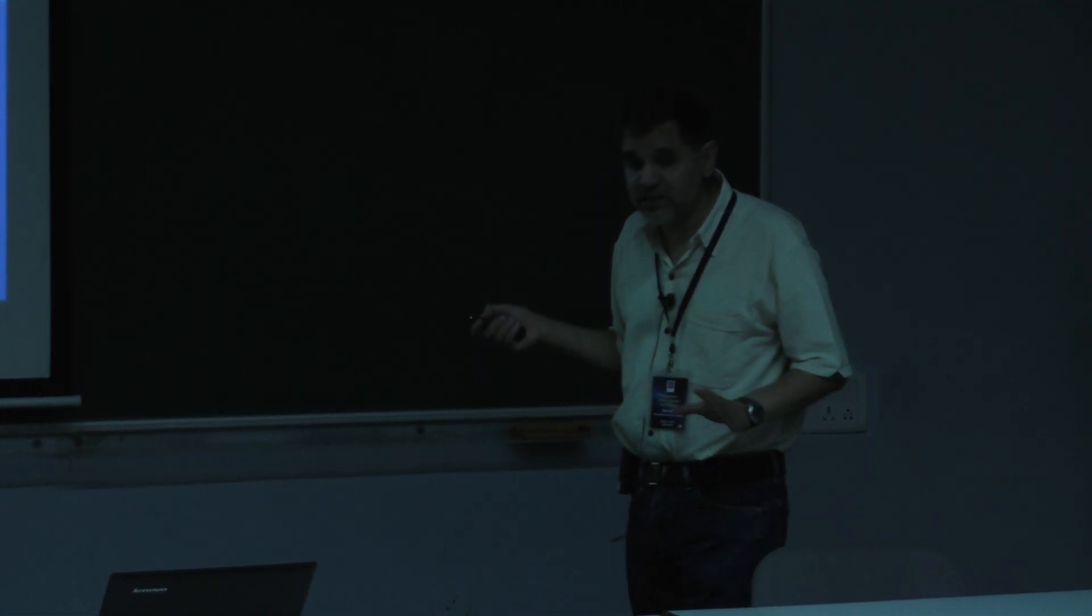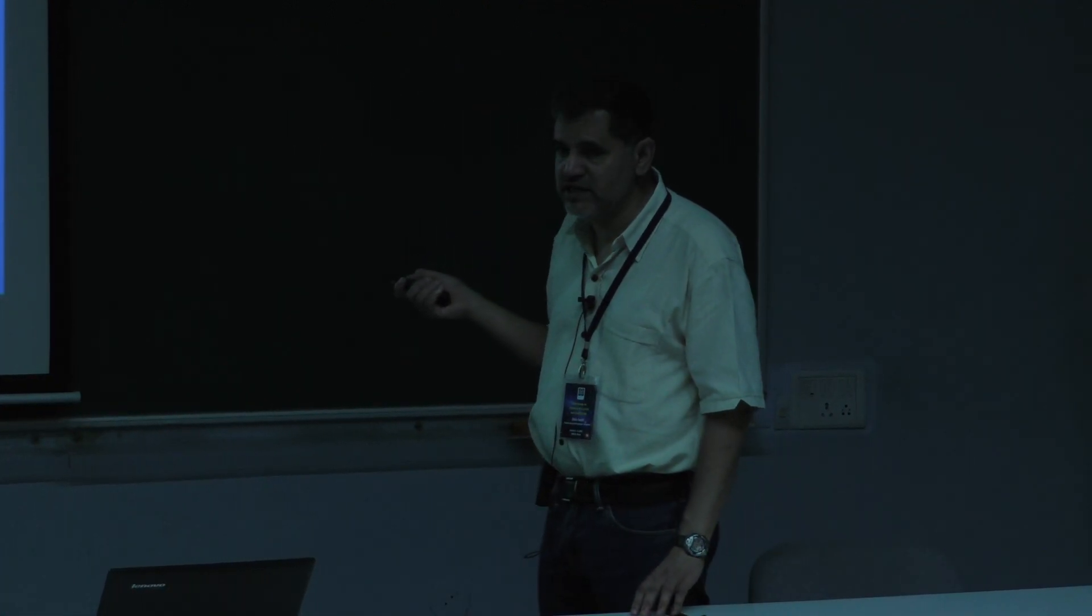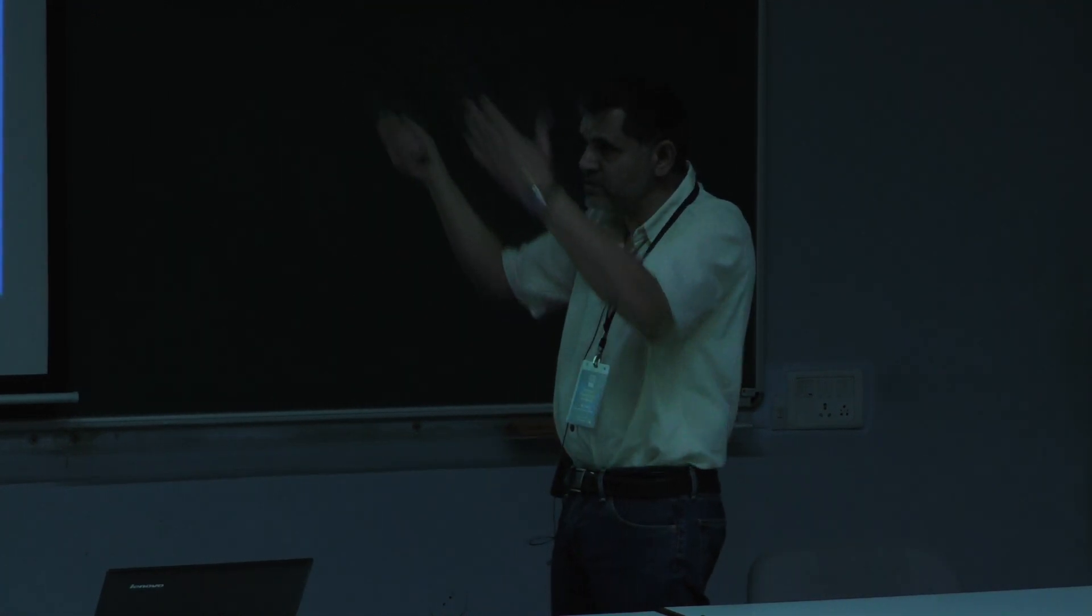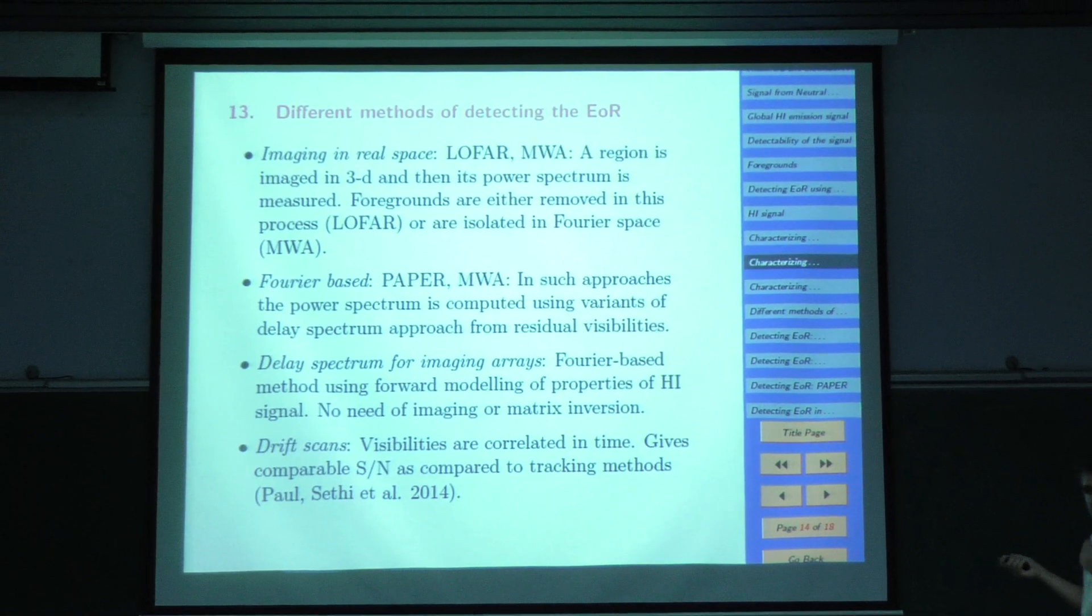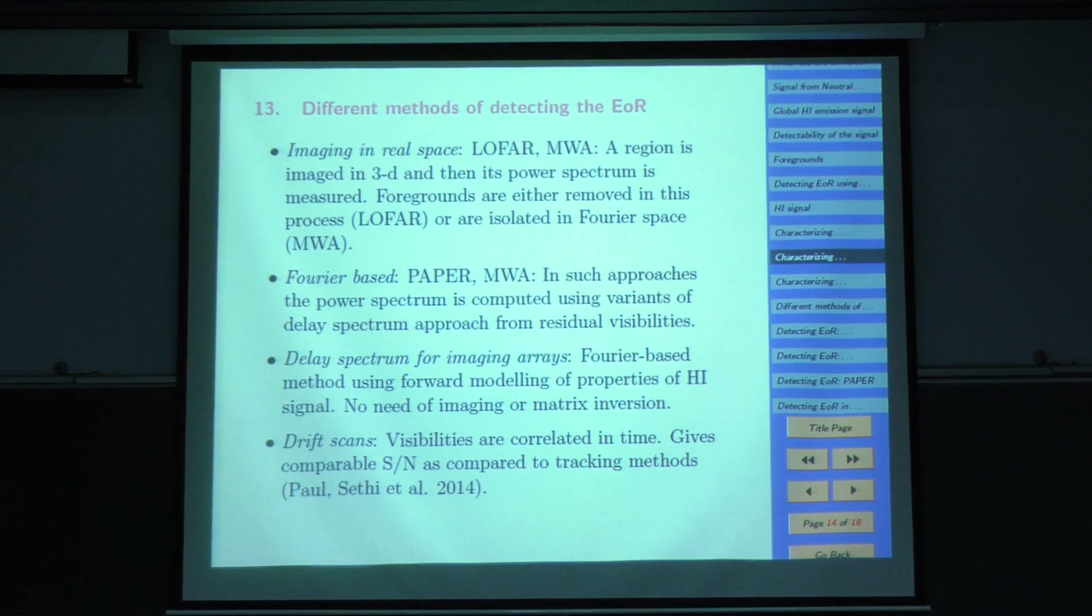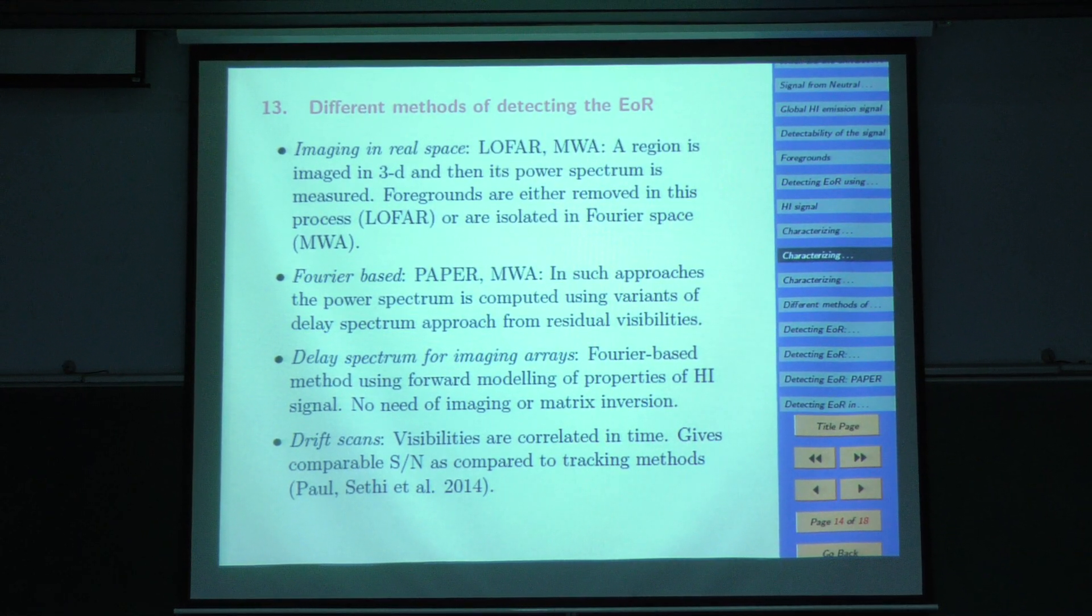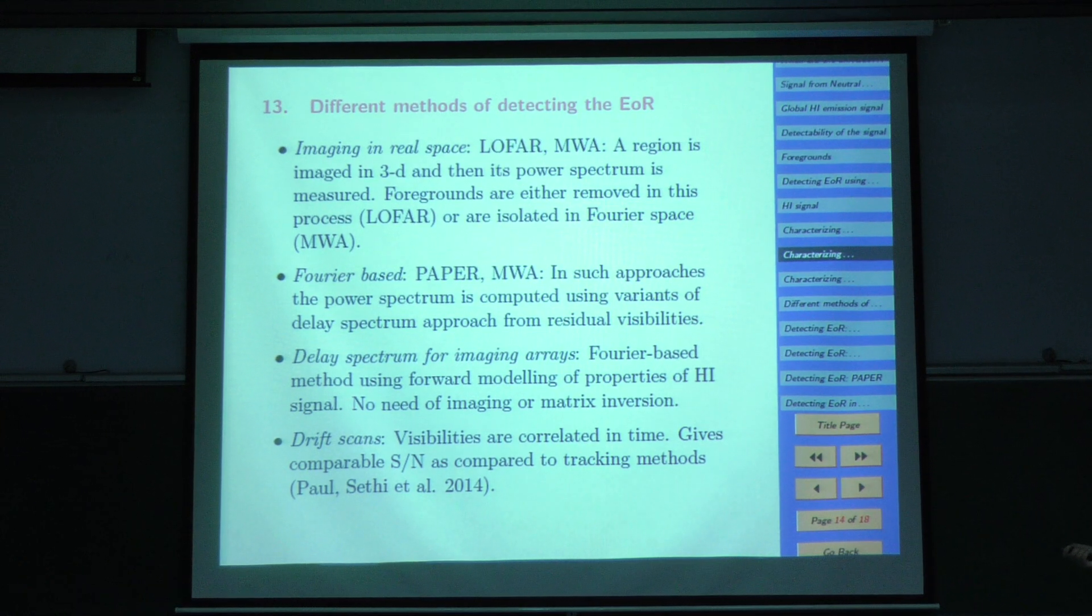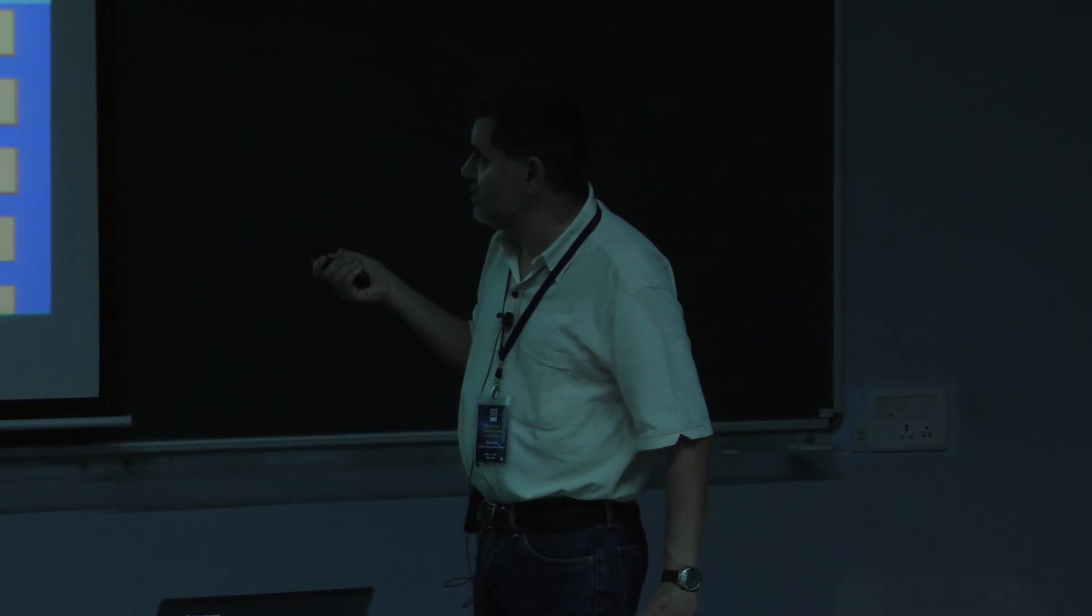I'll very briefly summarize what are the different methods of detecting EOR because there is a raging debate on this within groups also. One way to detect this, what LOFAR does, is it makes a three-dimensional image. Use an interferometer, make an image, take Fourier transform of that. How do you subtract foregrounds? You go deeper and deeper and take out foreground. That is LOFAR's approach. The other approach I have been working on is Fourier-based, and premier experiment for that is paper. Paper doesn't actually even image.